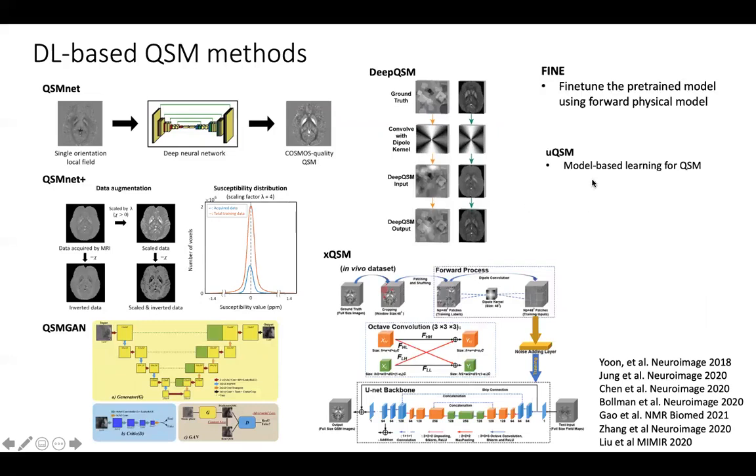Last year, we proposed a model-based learning for QSM without the need of QSM labels for network training. However, this method is limited. For Cosmos data for network training, it is time-consuming and expensive to acquire the dataset. Also, the Cosmos map contains errors from the calculation. The synthetic data for network training suffers from domain shift to induce performance drop. Also, the model-based learning we found doesn't work well in pathological cases.